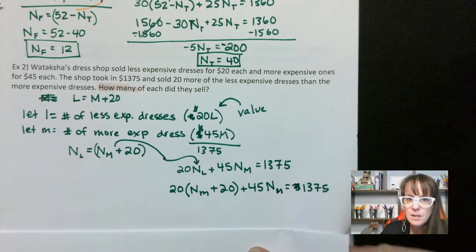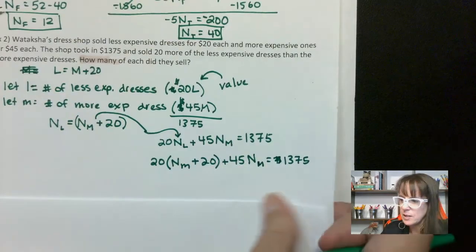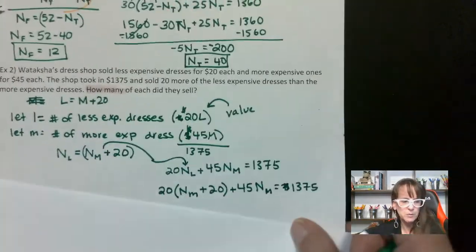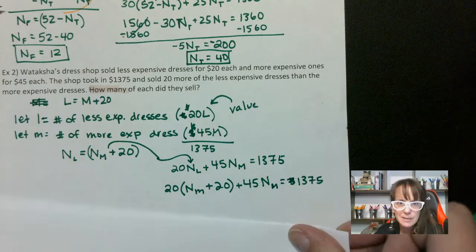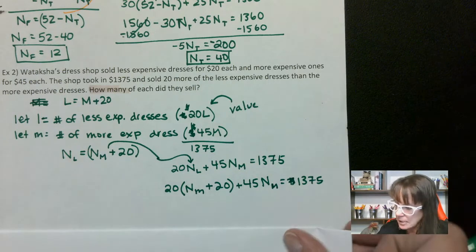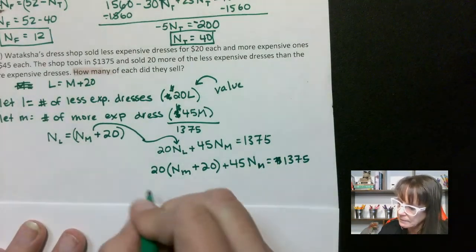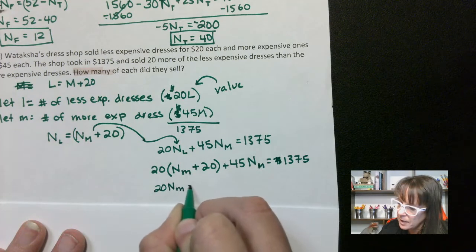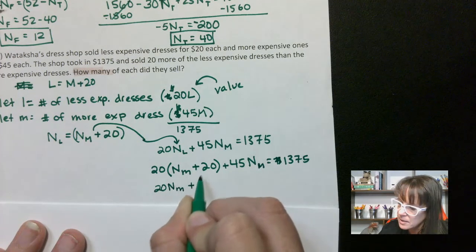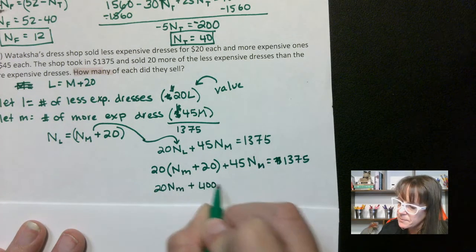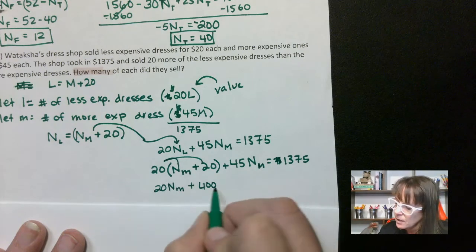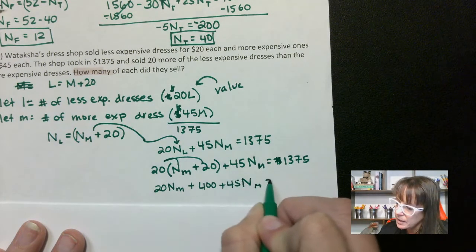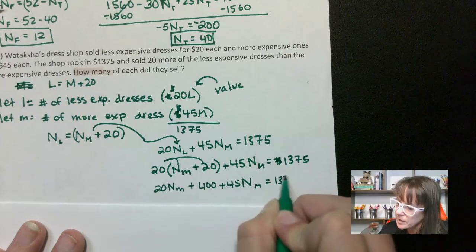I used to write in pencil when I made these videos, but it was really hard to see for kids on their phone, so I use markers now — but I make a lot of mistakes, so deal with it. Distributing: 20 N sub M plus 400 plus 45 N sub M equals 1,375.